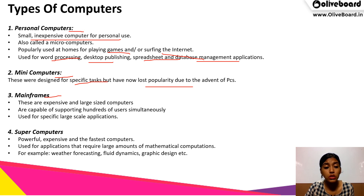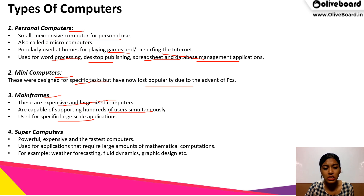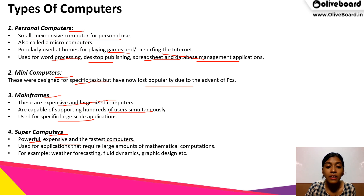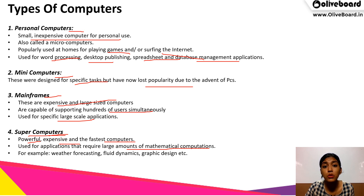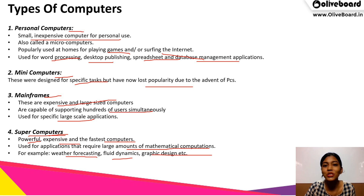Third is mainframes. These computers are very expensive and large in their size. They are capable of supporting hundreds of users simultaneously and are used for specific large-scale applications. Then supercomputers — these are very powerful, expensive and the fastest computers in the world. They are used for applications that require large amounts of mathematical computation, such as satellite operations, weather forecasting, fluid dynamics or graphic designing.